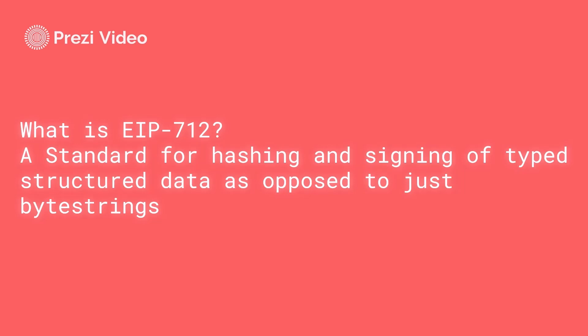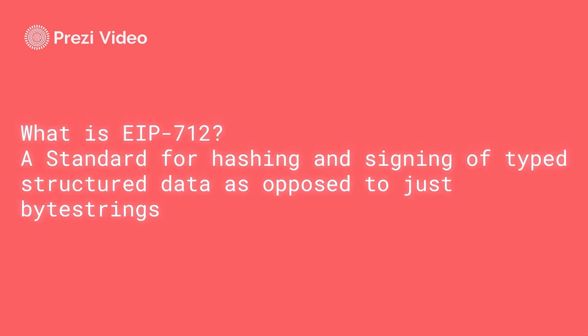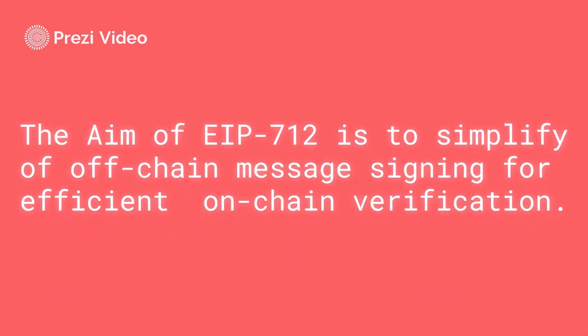So why was there a need for creating EIP-712 when we can do signing the normal way? The problem is when you try to sign something, you have to sign random bytes or strings, and that doesn't give you information about what you are actually signing. EIP-712 was proposed so that we have some kind of simple view about the message contents that we are trying to sign.